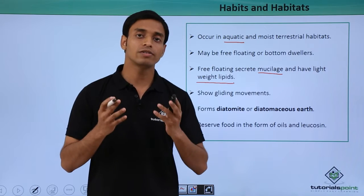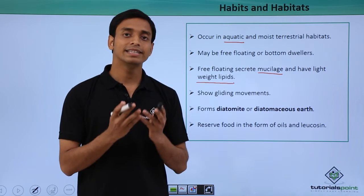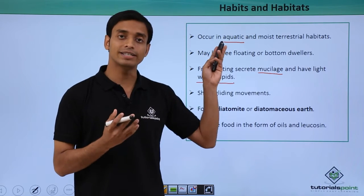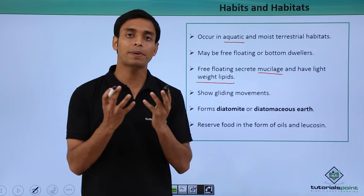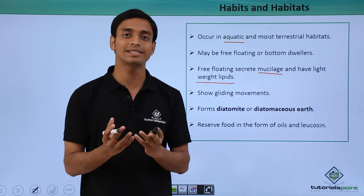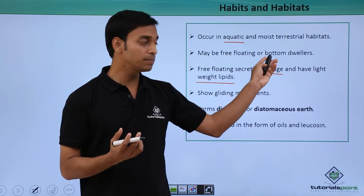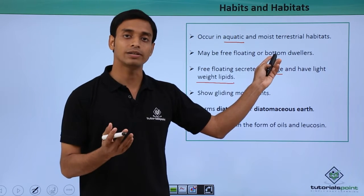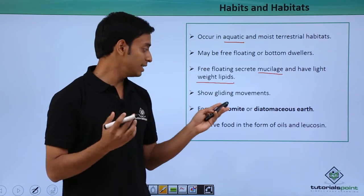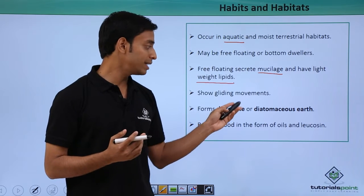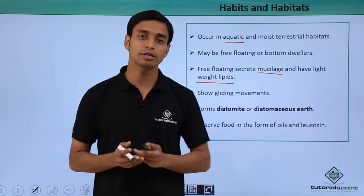Mostly in water reservoirs, these chrysophytes are deposited and pile up, forming huge piles on the bottom layer. Since they are mostly bottom dwellers, these piles are called diatomite or diatomaceous earth.